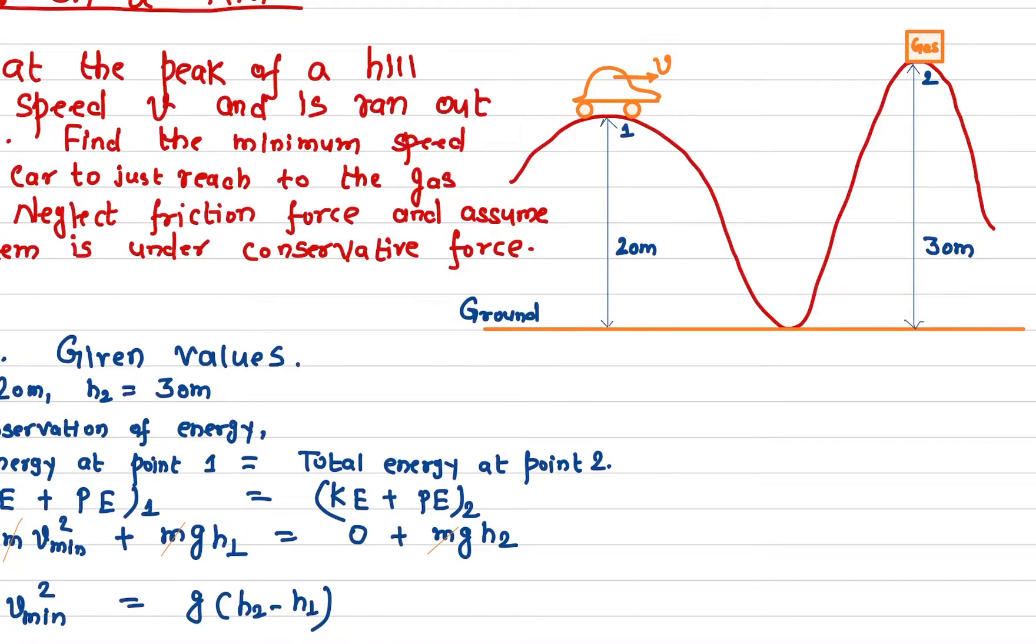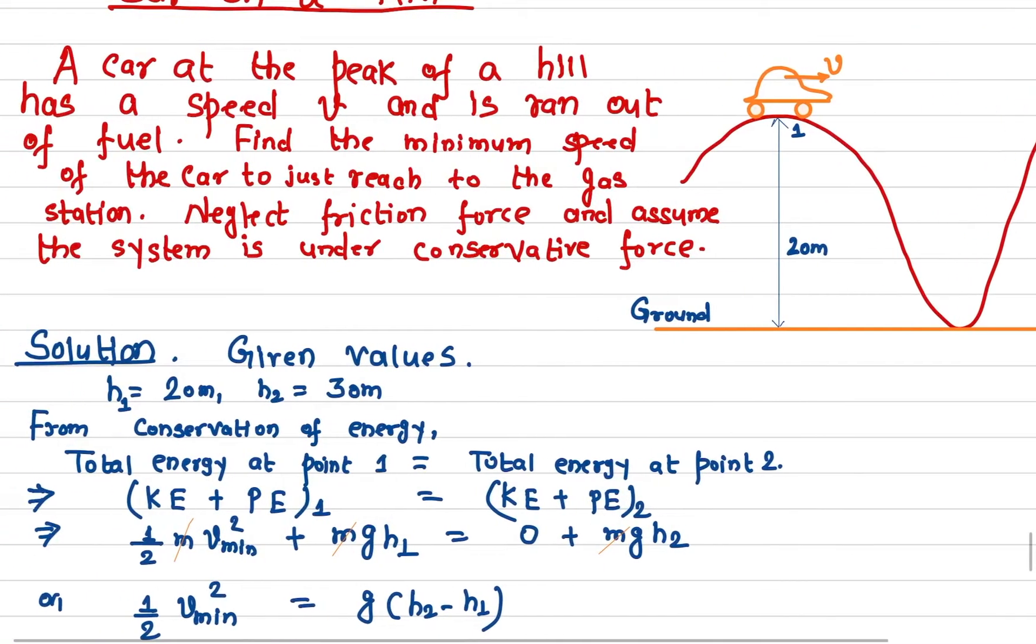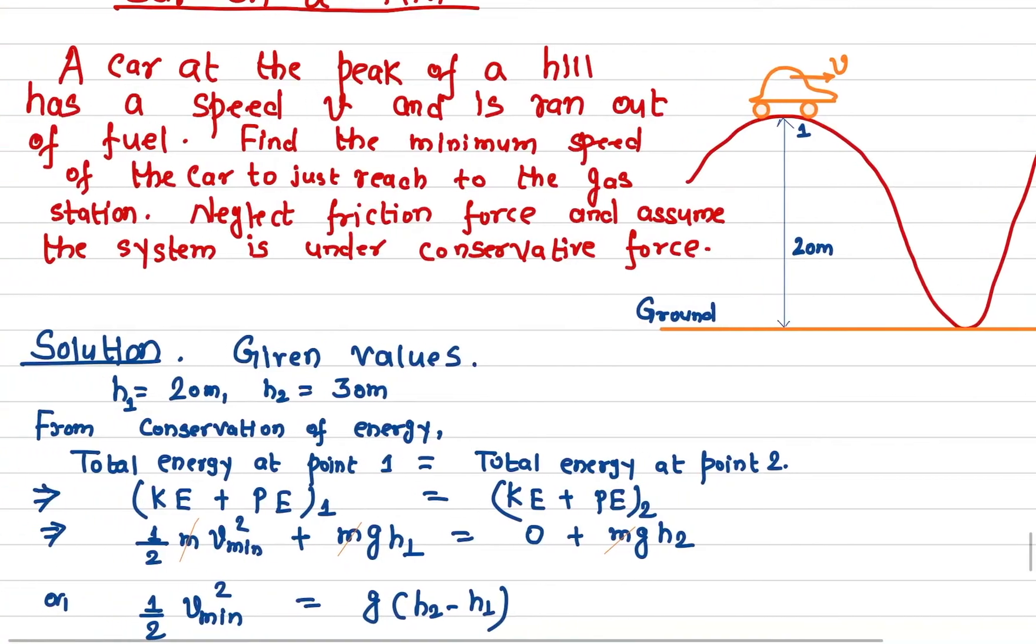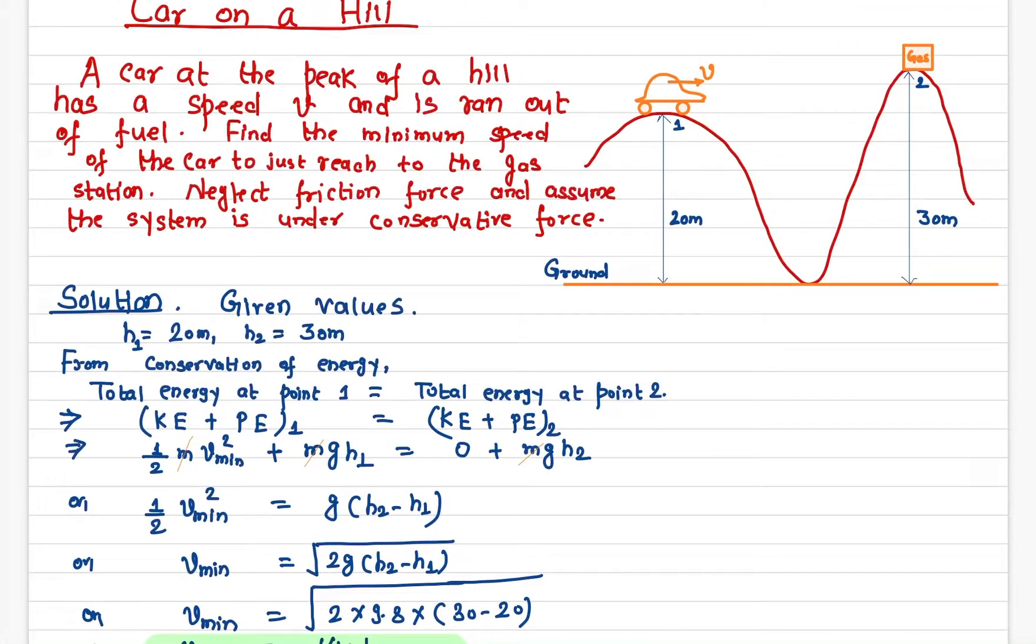In order for the car to reach the gas station under the conservative force, the total energy at point one has to be equal to the total energy at point two. The total energy includes the kinetic energy and the gravitational potential energy. This comes from the conservation of energy.